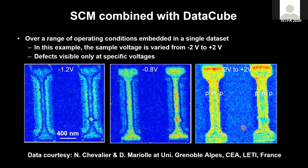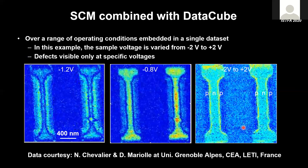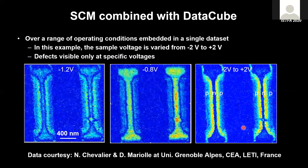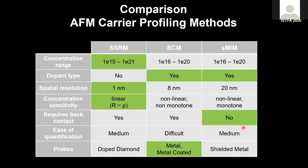The same data cube approach is also applied to the other electrical modes discussed earlier. Comparing the carrier profiling methods, there's a good reason multiple methods exist — each has particular advantages and limitations. Dynamic range is very similar across them. Spatial resolution with SSRM is superior to the other methods, while SCM and SMIM can also identify whether regions are P-type or N-type. More detail on differences is covered in the full version of this tutorial.